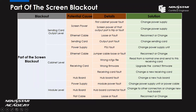For the sending card output level, first check the screen power. If the first cabinet power is faulty, or if the screen power of that output port is tripped or faulty, we need to change the power supply. Also check the Ethernet cable — if it is loose or something is wrong, reconnect or change another one. For the sending card, check the output port. If there is something wrong, change the output port. If there are not enough output ports, change to another sending card.